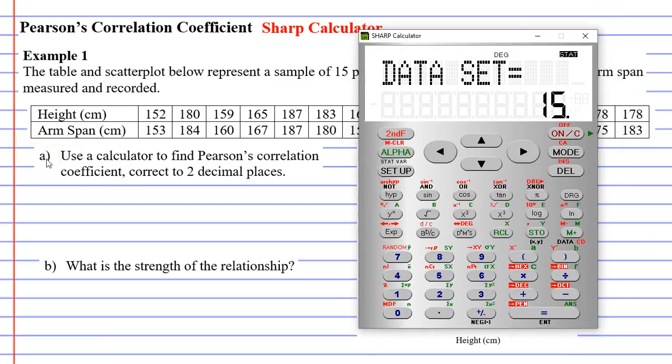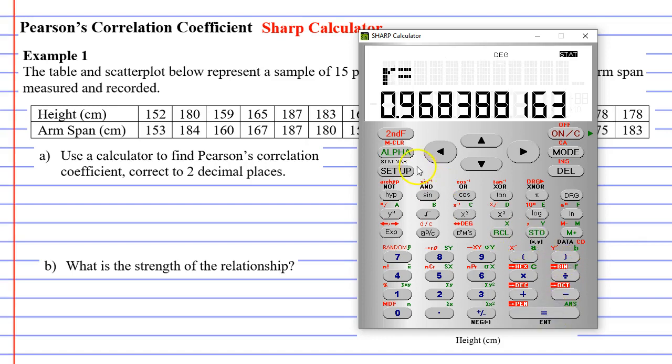Alright, let's complete question A. Use a calculator to find Pearson's correlation coefficient correct to two decimal places. And what we're looking for is the letter R. And we can see it here. And we mentioned earlier that R is a representation of the correlation coefficient. It's above the division symbol. So we're going to go alpha, divide, and click equals. And here we have our correlation coefficient.